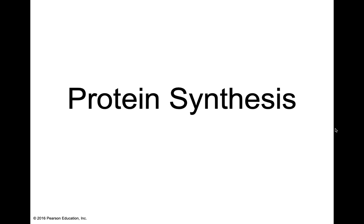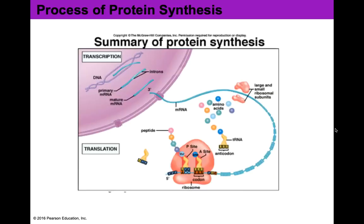Hey guys, we finally reached the end of chapter 3 — the world's longest chapter ever — to talk about protein synthesis. Here's the overview of the process. Protein synthesis has two major steps called transcription and translation. Transcription occurs first inside of the nucleus, and translation occurs second out in the cytoplasm at a ribosome. We're going to go through this process of how we make proteins, because that's literally what protein synthesis means.